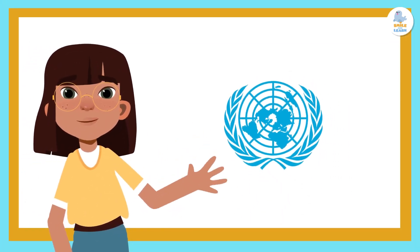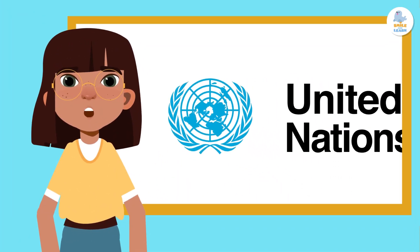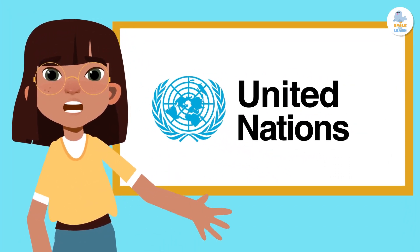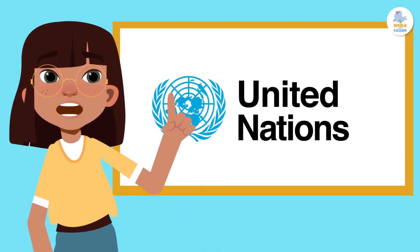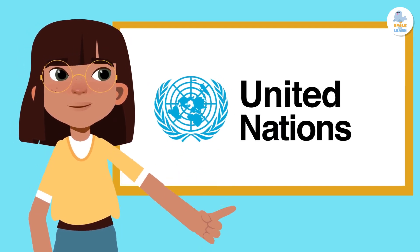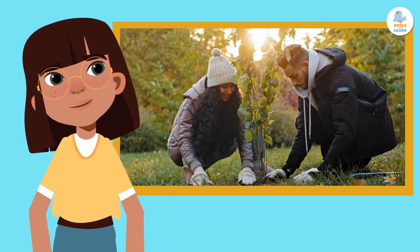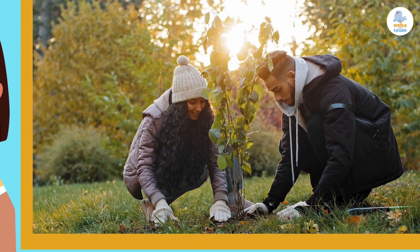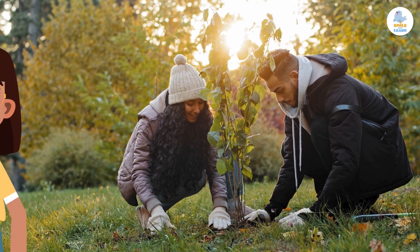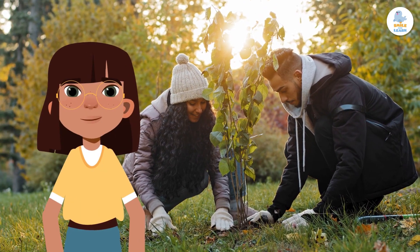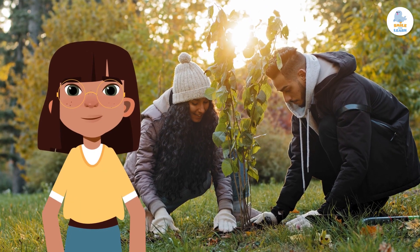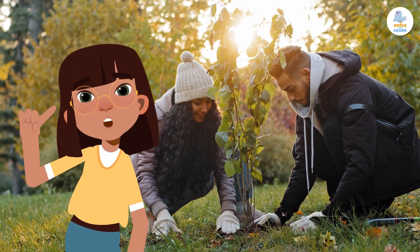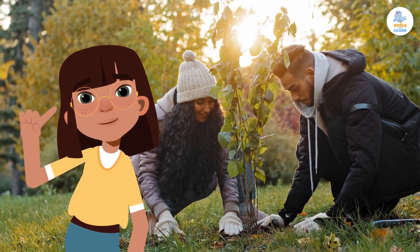70% of the planet's harmful carbon emissions come from cities. For this reason, the United Nations believes it is a key sustainable development objective for communities and cities to be more respectful of the environment. It's very important to take care of the planet we live on.